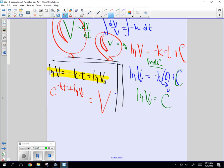e to the negative kt plus natural log of v0 is equal to v. Oh, you're so close. Because then you can say e to the negative kt times, times, right, e to the log base e of v0 is equal to v. What's e to the log base e of v0? v0 times e to the negative kt equals v.